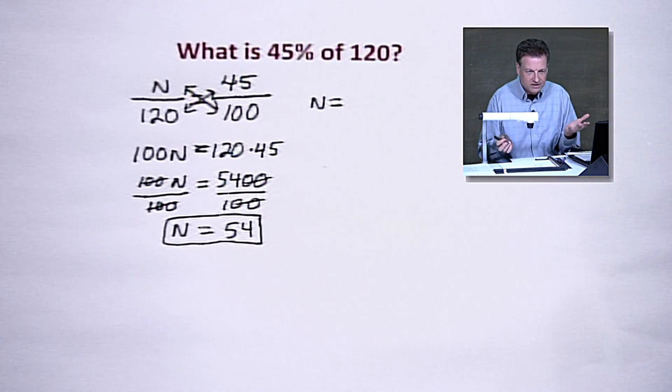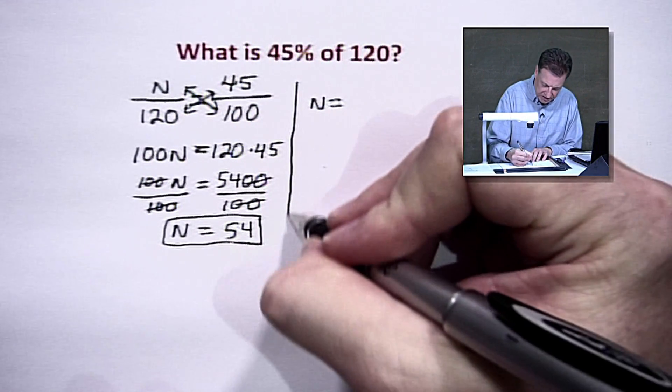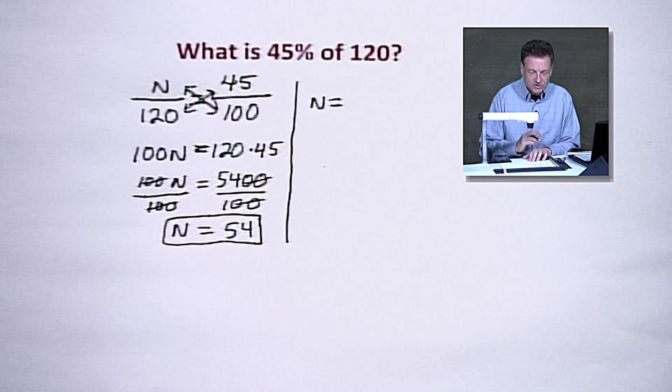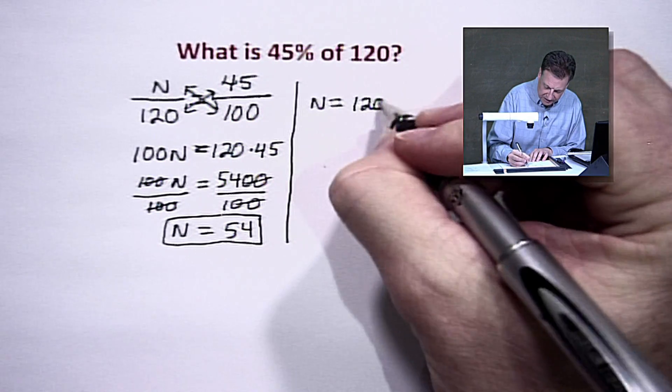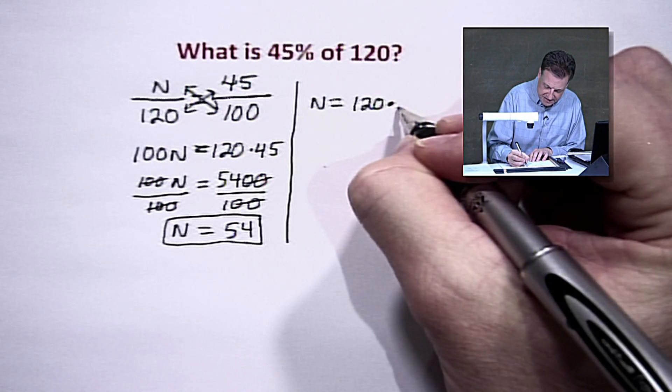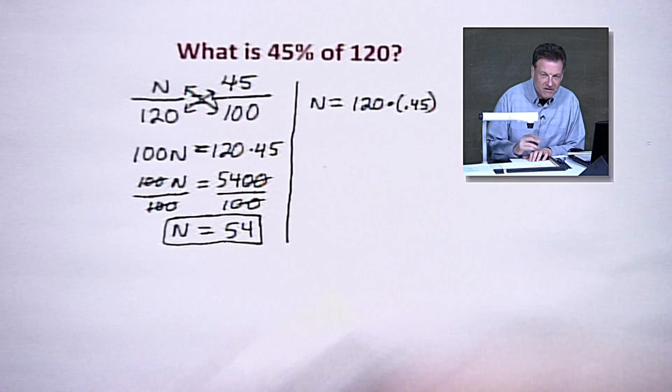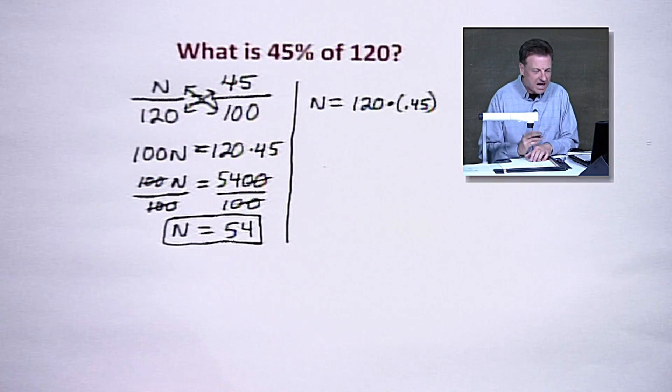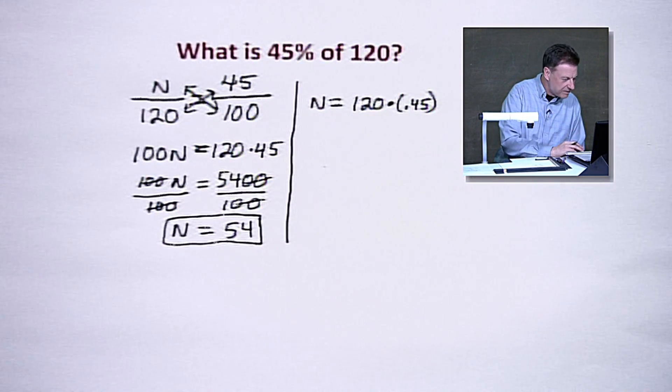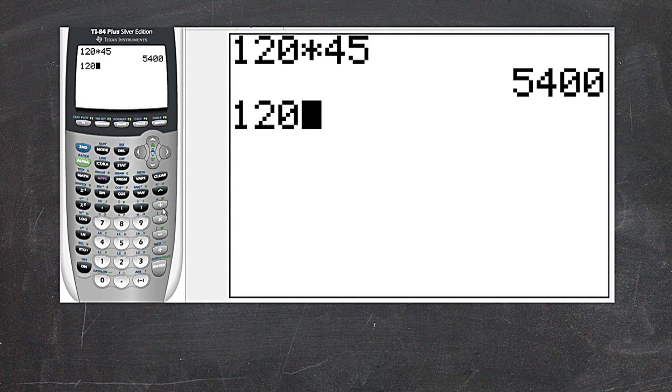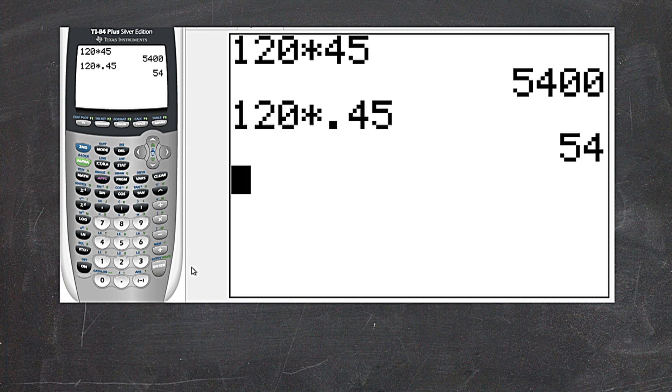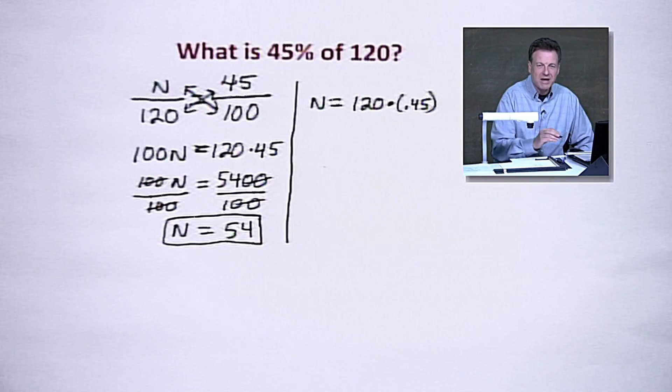So what we're going to do, we're going to basically say our N in this case, which is what we're looking for, is equal to that 120. And we're going to multiply it times that 45 hundredths. We're going to change it to a decimal. Multiplying it together, let's go back to the calculator. Multiply it times 45 hundredths, which that's the decimal with the 45 coming after it. And let's press enter. It's 54, which is the same thing we had once we divided by 100.